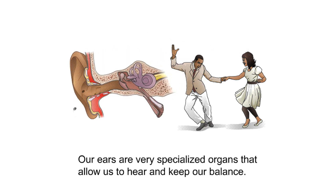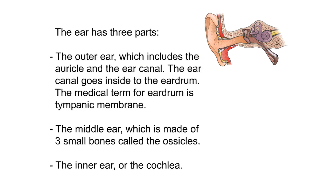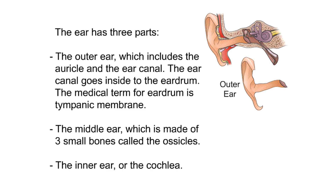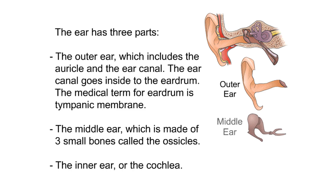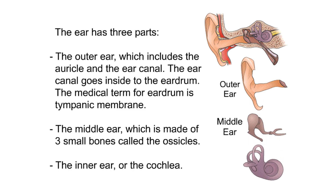Our ears are very specialized organs that allow us to hear and keep our balance. The ear has three parts: the outer ear, which includes the auricle and the ear canal; the ear canal goes inside to the eardrum — the medical term for eardrum is tympanic membrane; the middle ear, which is made of three small bones called the ossicles; and the inner ear, or the cochlea.